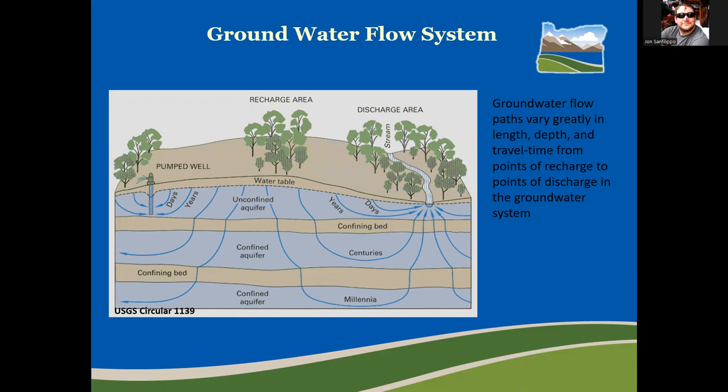On this particular diagram, the blue lines are showing groundwater flow paths from areas of recharge in the uplands in the center of the diagram to areas of discharge on the right and left. This diagram also shows how time varies with depth, especially when it flows through a confining bed — the tan lines going from left to right.